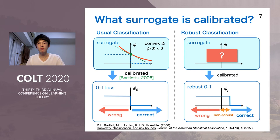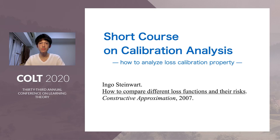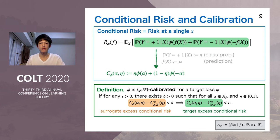To analyze loss calibration properties, we briefly review the calibration analysis framework, largely based on earlier work. There are two important notions. First, conditional risk is the risk at a single point x — here it is the surrogate risk of surrogate loss function phi, where we decompose the expectation over x and y given x. Writing the class probability P(y|x) as eta, and the prediction f(x) as alpha, we get a simplified notation for conditional risk, which fixes a single x and considers the risk value.